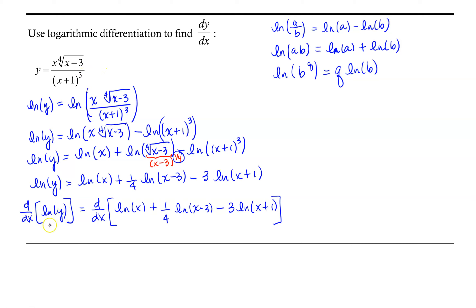Differentiating implicitly on the left-hand side, we get 1 over y times dy/dx. On the right, the derivative of the natural log of x is 1 over x, plus one-fourth times — using the constant multiple rule — one-fourth times the derivative of the natural log of x minus 3.